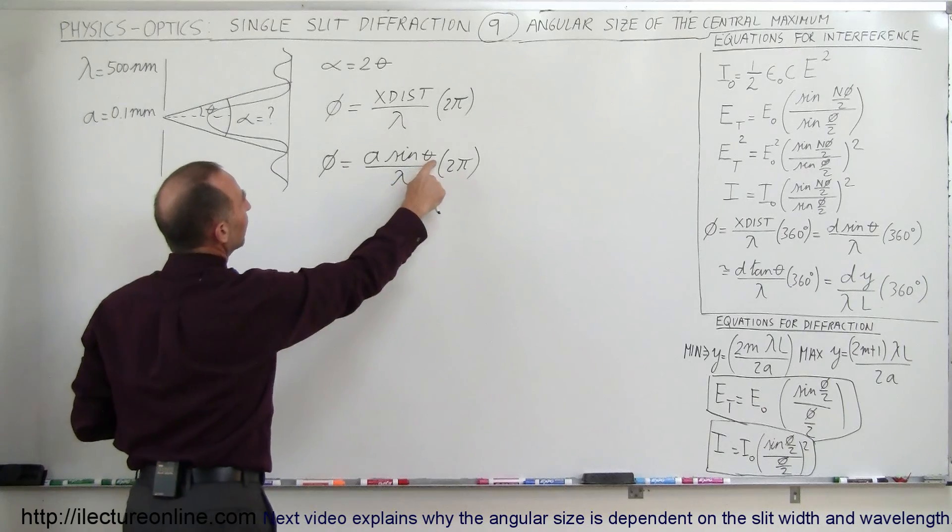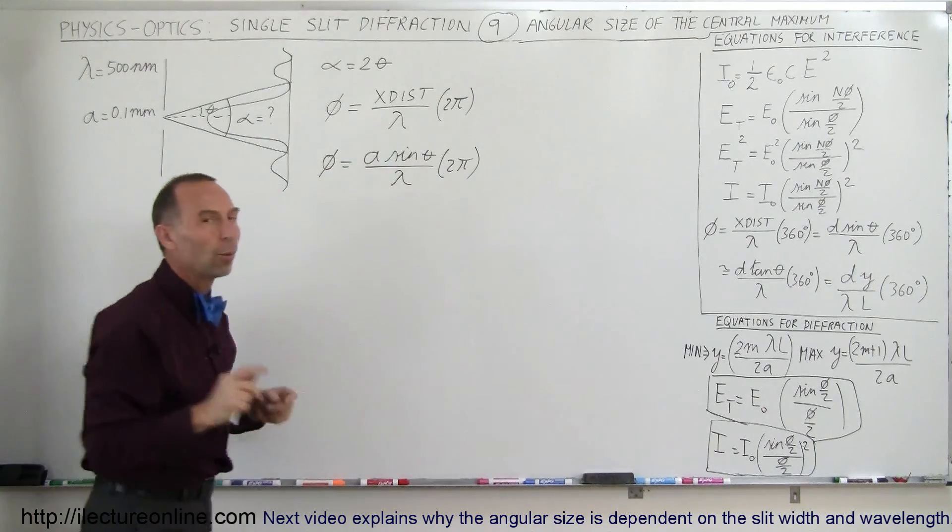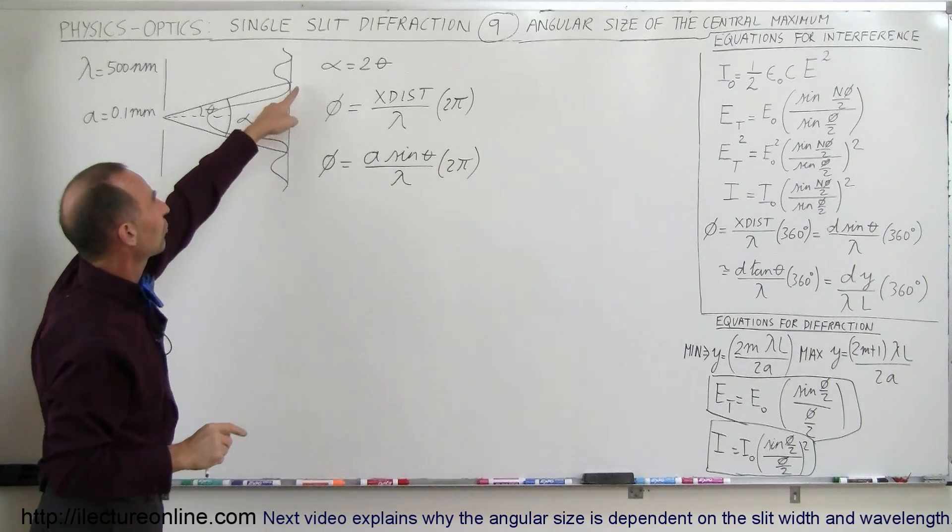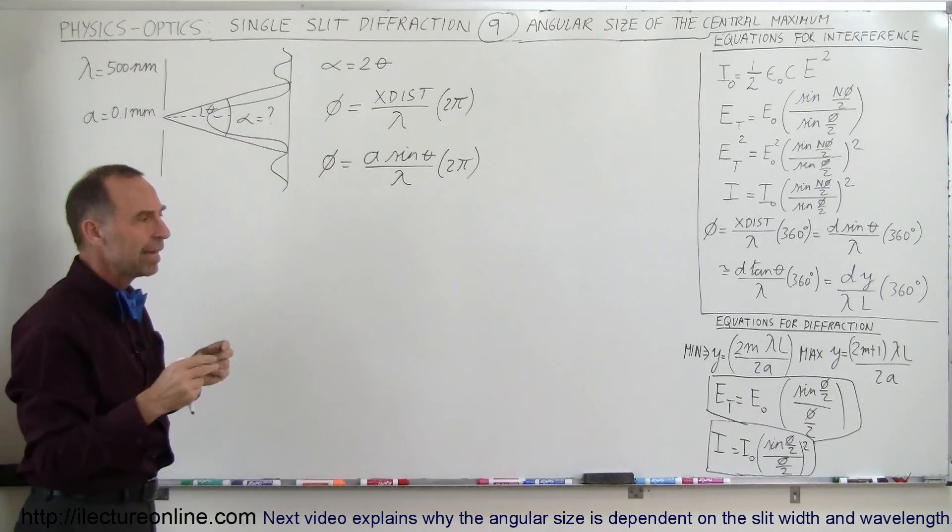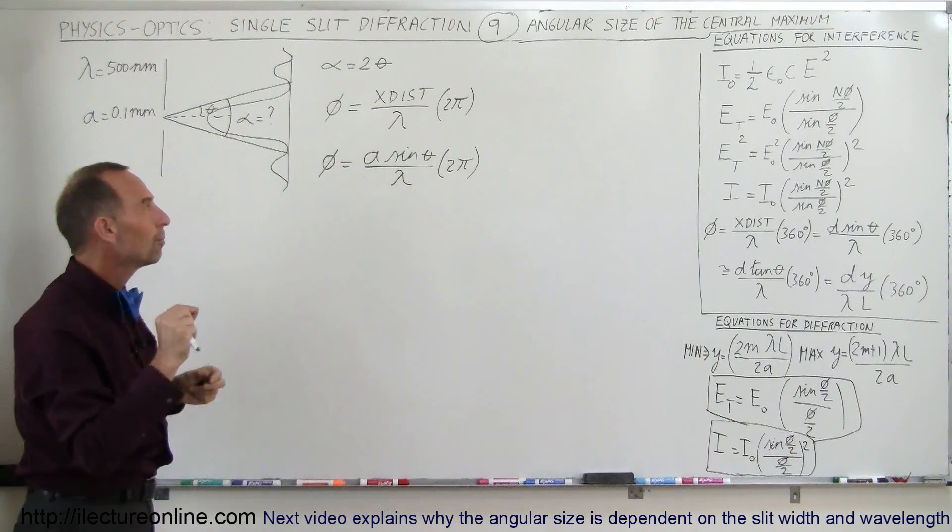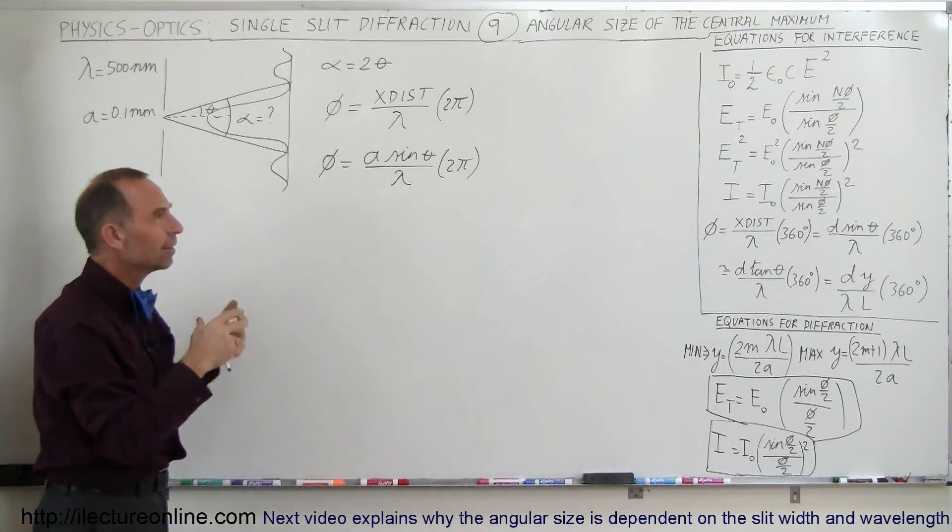So we're trying to find theta in terms of phi. Now, what is phi equal to when we reach our first minimum? Well, that's the phase difference between the top and the bottom half of the beam. That would have to be equal to 2 theta. No, not 2 theta, I'm sorry.